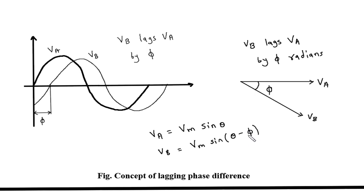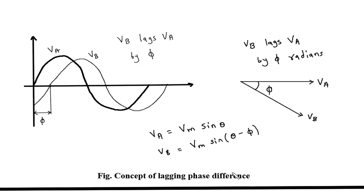When the phase difference or phase angle is negative, we say that Vb lags Va by Phi. In the Phasor Diagram, again Va is taken as a reference because its starting point is from 0. Vb will be on the lower side because the phase angle is negative. This Phi is the phase angle, so Vb lags Va by Phi radians. This is the concept of lagging phase difference.